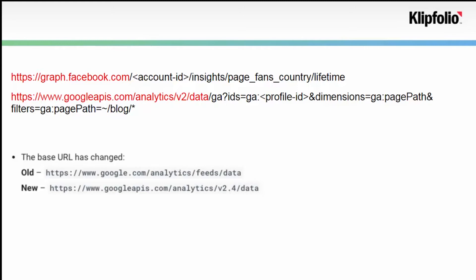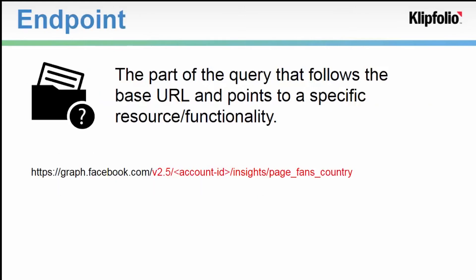Generally speaking, the stuff that follows the base URL is the endpoint. If you think of the API as a filing cabinet, then the endpoint picks up the specific file that you're looking for. In this case, we want to look at our page fans by country from the Facebook API.